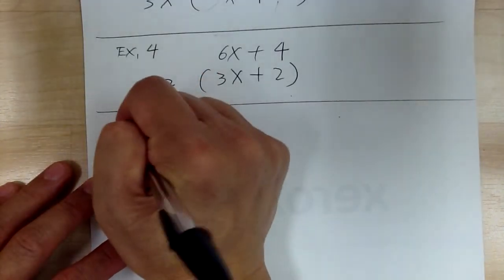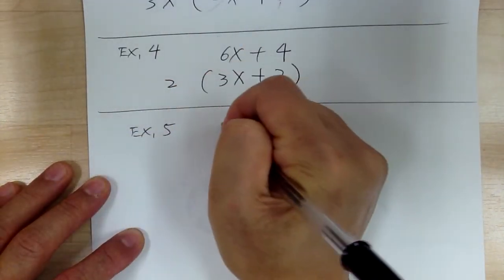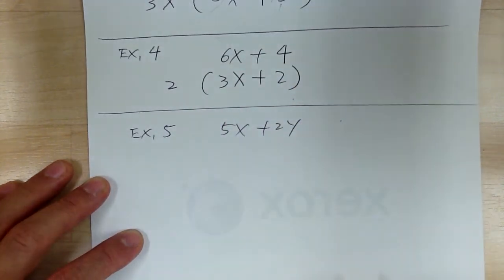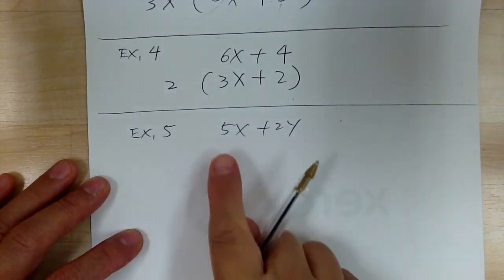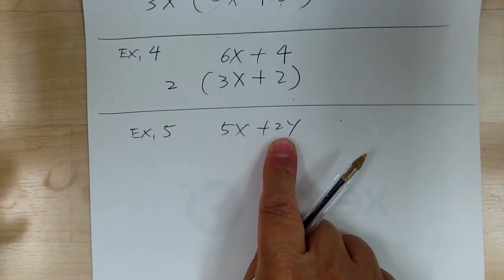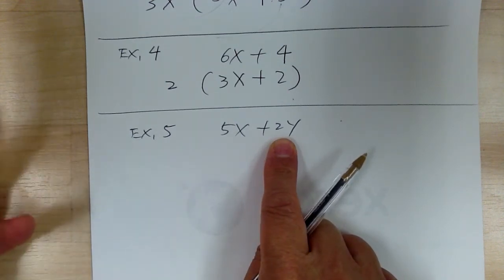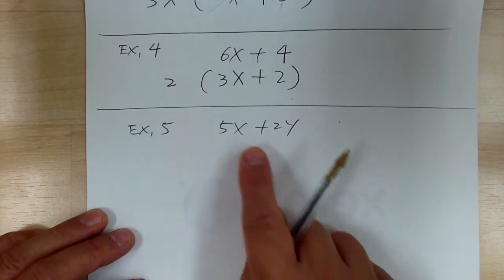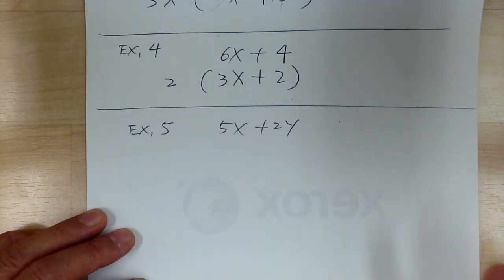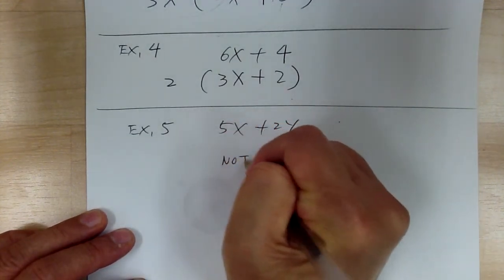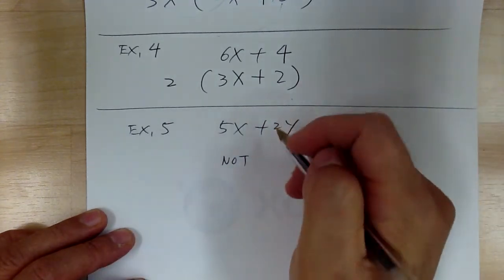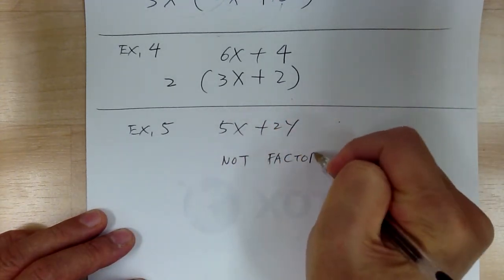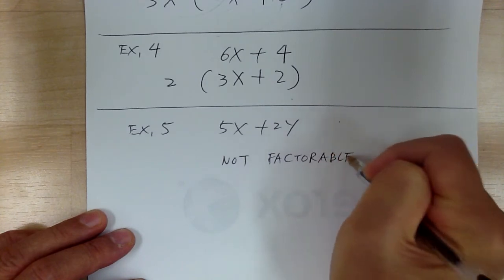Example 5: you've got 5x plus 2y. First do the numbers — 5 and 2, can you factor anything from them? No. How about the variables x and y? They don't have anything in common. So this one is not factorable — there's nothing you can take out between them.